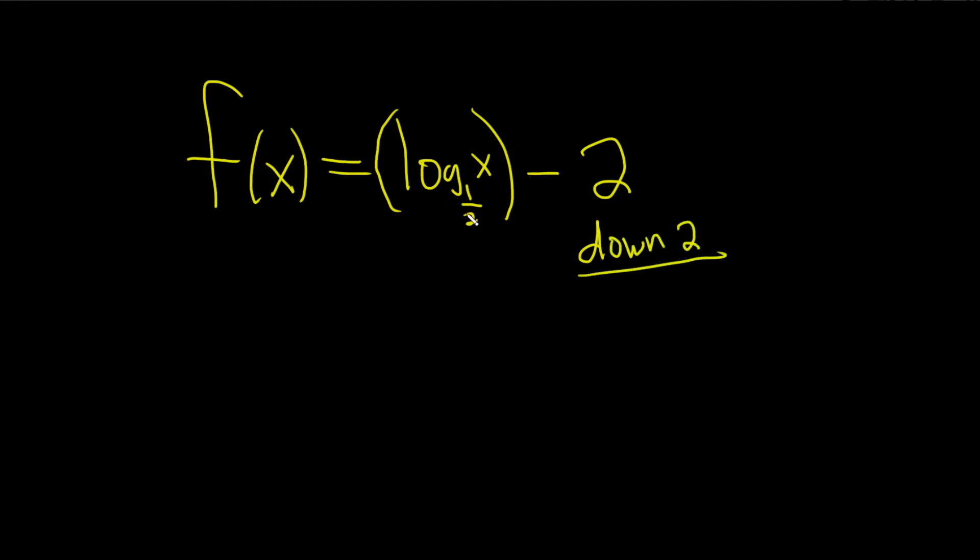So what does this look like, log base 1 half of x? Let me show you. Here is the x-axis and here is the y-axis. And it has a vertical asymptote at x equals 0 like this.